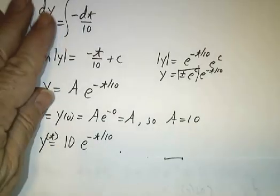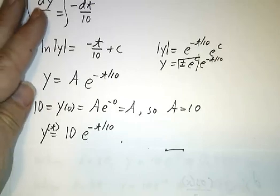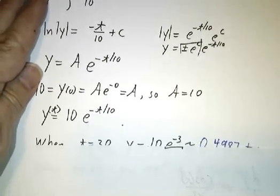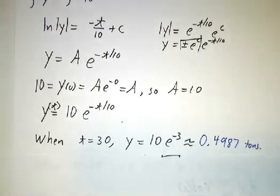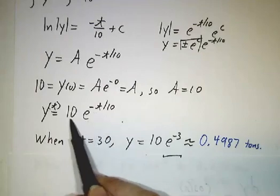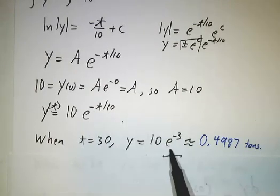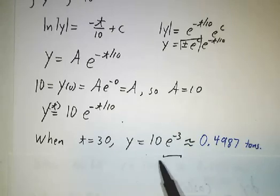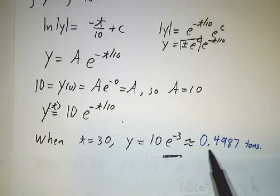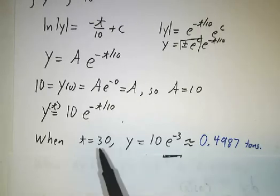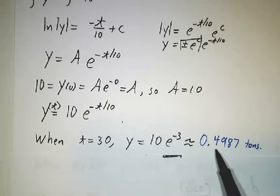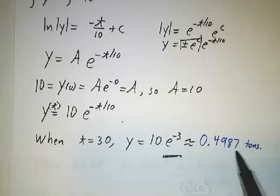So, the parks authority was wondering, is it safe to reopen the lake after a month? So, after 30 days, you plug in t equals 30, and you get 10 e to the minus 30 over 10. So, that's 10 e to the minus 3. And you discover that we're down to 0.4987 tons. Roughly, we start off with 10 tons, and after a month, 19 twentieths of it has been washed away, and we're left with half a ton.